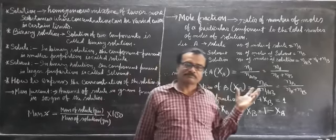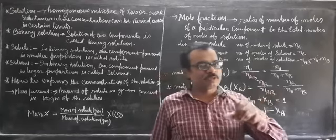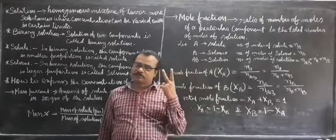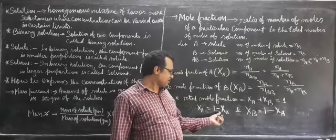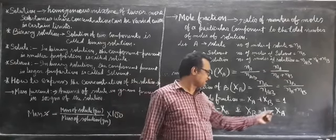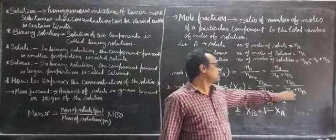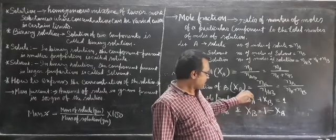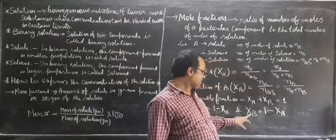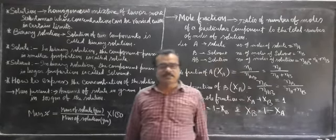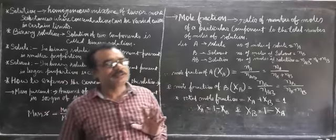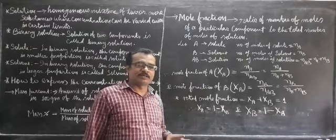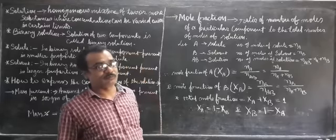During calculation, if one mole fraction is known, the other can easily be calculated because the total mole fraction is always one. So XA equals one minus XB, and XB equals one minus XA. If one mole fraction is available in the question, simply subtract it from one to get the other mole fraction — no need to go into the full formula details.